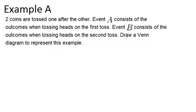In example A, it says two coins are tossed one after the other. Event A consists of the outcomes when tossing heads on the first toss. Event B consists of the outcomes when tossing heads on the second toss. Draw a Venn diagram to represent this sample.